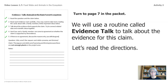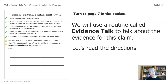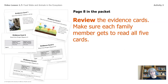If there is disagreement, discuss the reasons why you still disagree. Our question is why aren't the jaguars and sloths growing and thriving, and we've made a claim that there are not enough plants in the project area. Let's take a look at our evidence cards. Review them on page 8 of the packet and make sure each family member gets to read all five of the cards.